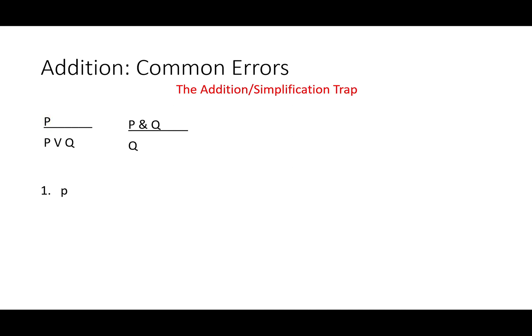The addition simplification trap occurs when you use addition or simplification correctly, but the other one wrong, to introduce literally anything. If something sounds too good to be true in logic, as in life, it probably is. So P, therefore P or Q by addition. Okay, that's fine. And then simplification Q on line two. You can't use simplification with a V. You can only use it with the ampersand.